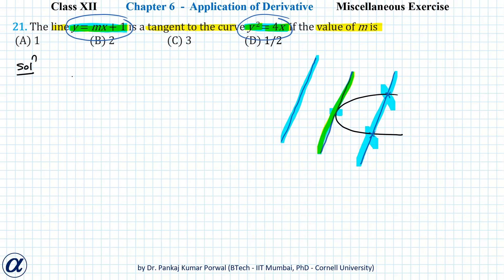We get (mx + 1)² = 4x, or m²x² + 2mx - 4x + 1 = 0, or m²x² + (2m - 4)x + 1 = 0.